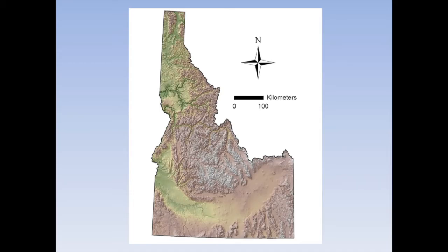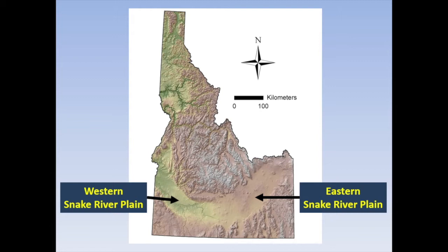If you look at a relief map of Idaho, it's easy to see what's been called a large smile in the southern half of the state. This indicates a region of low relief, which is the Snake River Plain. It extends from the eastern boundary with Wyoming all the way across the state and makes up more than half of the western boundary with Oregon. This area has traditionally been subdivided into the eastern and western Snake River Plain. Lake Idaho, when it existed, occupied part of the western Snake River Plain.